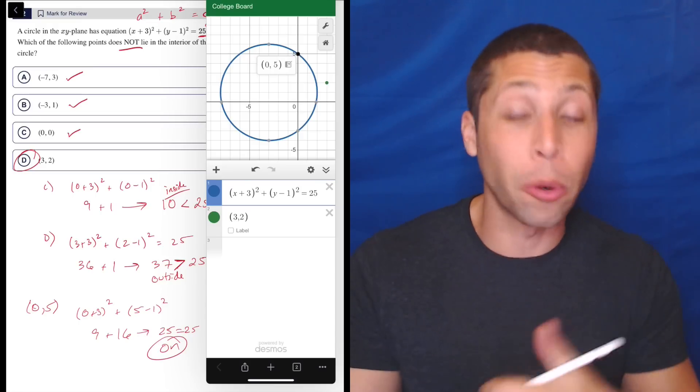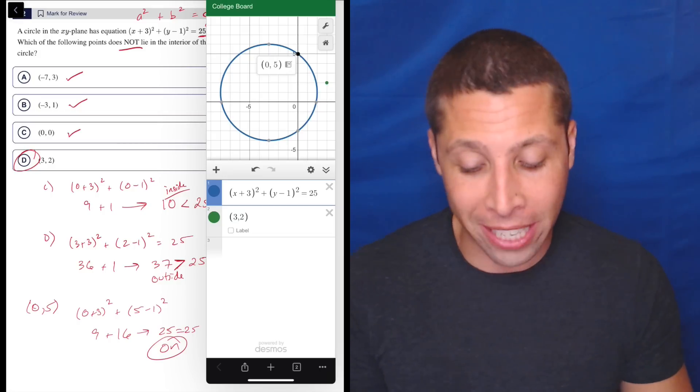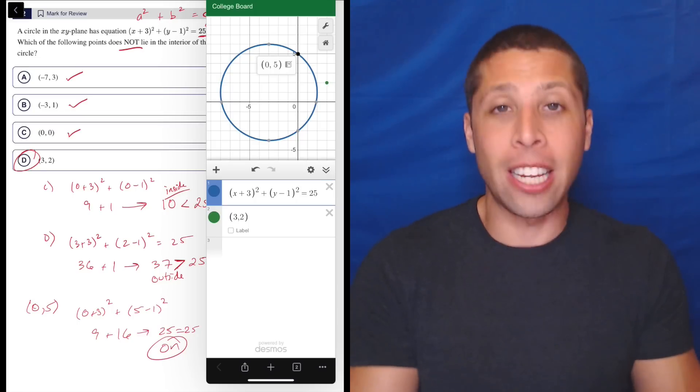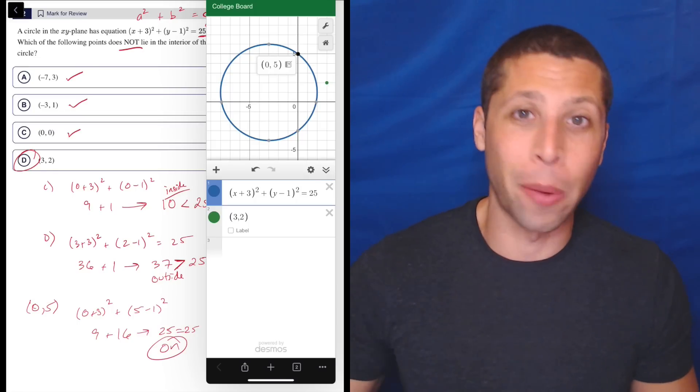That's how you had to do it on the old SAT before you had the calculator, because you didn't have a calculator for every question. I believe this is one you didn't. And oh boy, that's much harder, at least with Desmos. You can literally just see the point is not inside of the circle. So there you go. Definitely an easier way to do it.